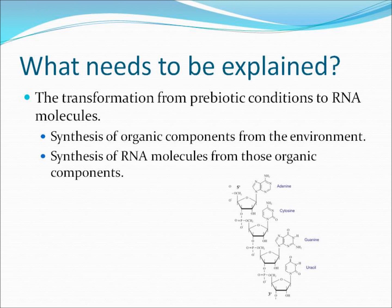What needs to be explained by the RNA hypothesis is a method of taking organic compounds and producing RNA molecules capable of reproduction, heritability, adaptation, and variation. The process started with a bunch of elements floating around in a primordial soup, and there needs to be a method to combine those elements into more complex organic compounds. These organic compounds must then, under the right conditions, be capable of forming some type of RNA so that information can be stored and passed on, and primitive organisms can begin to implement natural selection.